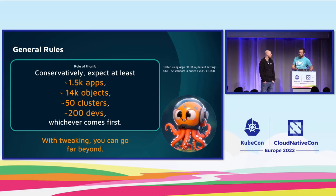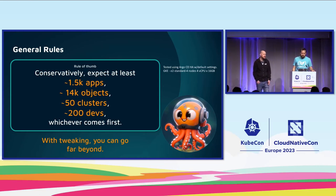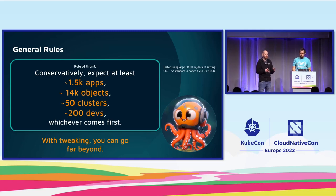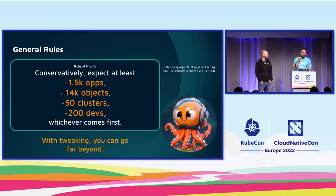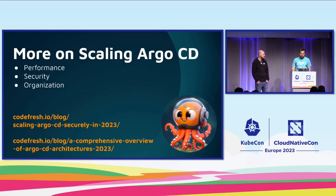You can expect at least 1,500 apps, 14,000 objects, 50 clusters, and 200 developers before things start to maybe need to be tweaked — though these are pretty rough estimates. With 200 clusters right here and it still working okay, it can vary a lot based on your environment, the size of your clusters, and what your devs are actually committing. Argo CD is very very scalable; there are a lot of reasons you'd want to have more instances, and this goes into some of the scalability content we've put out.